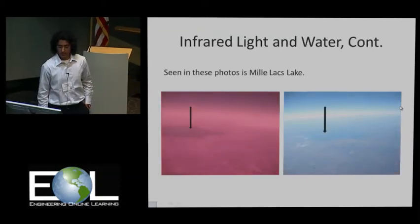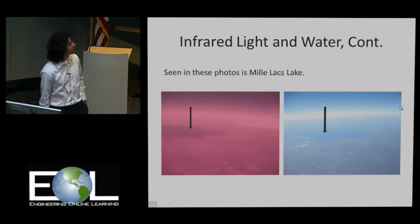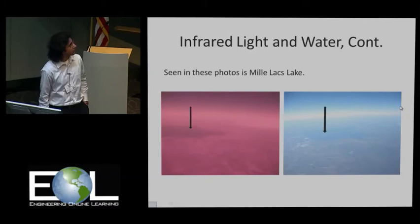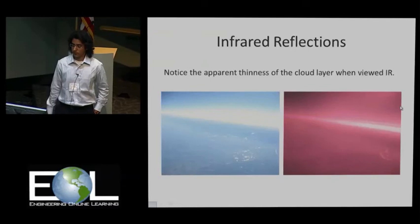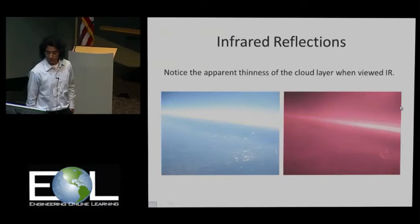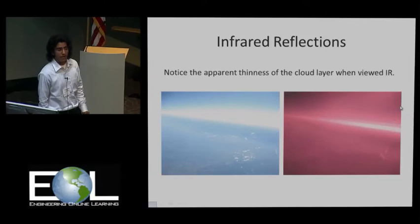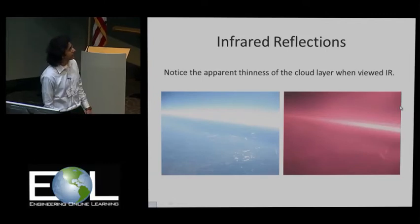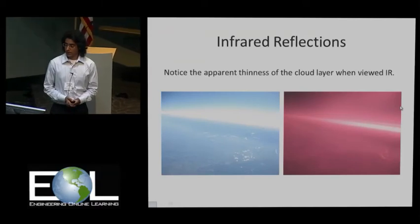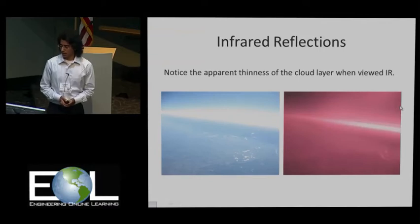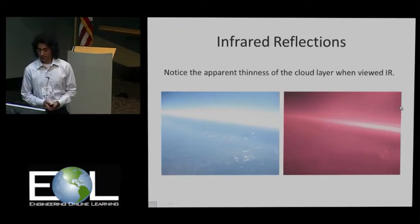Seen in this photo is Mille Lacs Lake in Minnesota. The infrared photo gives a really dark patch compared to the visible light photo, which is like seeing through the haze. As our payload took pictures of a cloud layer, the apparent thinness of the cloud layer is noticed in the infrared photos, which could be because a lot of infrared light is absorbed by the atmosphere, giving it higher penetrating power, whereas in visible light, a lot is reflected by the cloud layer.